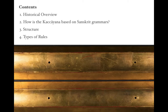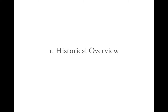In the first session, we are going to see a historical overview of the Kachayana grammar, and then how the Kachayana is based on Sanskrit grammars. Third, we are going to see the structure of the Kachayana grammar. And fourth, the different types of rules. This last section I would say is the most important one. If that one is clear, then the next sessions will be easy to follow. So we begin with the historical overview.